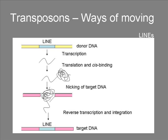Often, not the whole element is reverse transcribed, but it becomes truncated and loses the function of its protein. It can, however, still be transposed via trans-acting proteins of other elements. Some LINEs insert only at particular sites, as the enzymes can only recognize and nick a particular DNA sequence. Some transposons are known to insert themselves into other transposons or into copies of themselves. However, most LINEs insert just randomly.